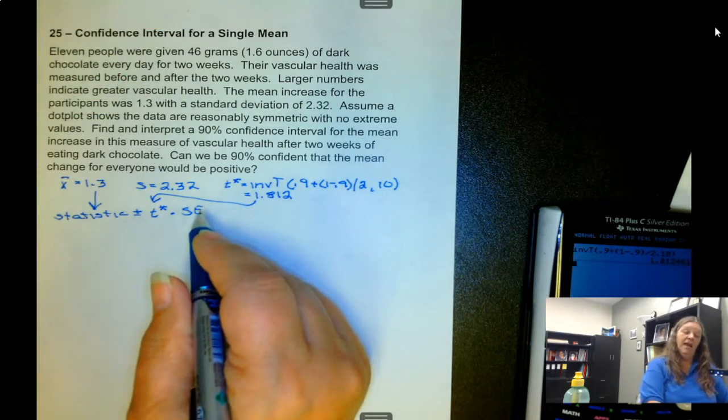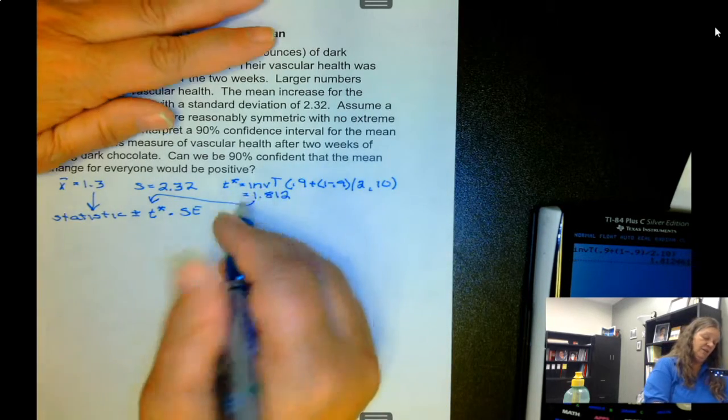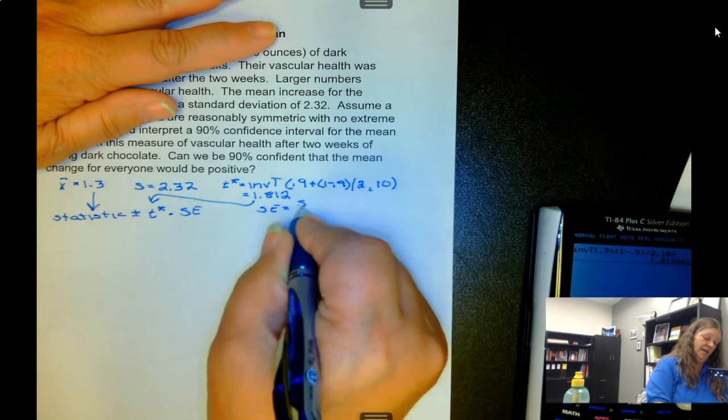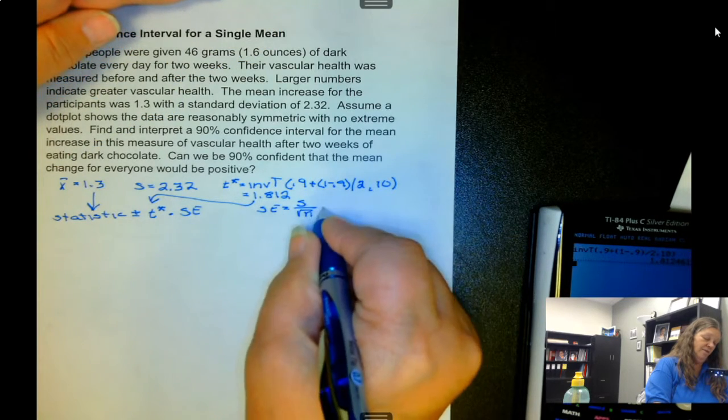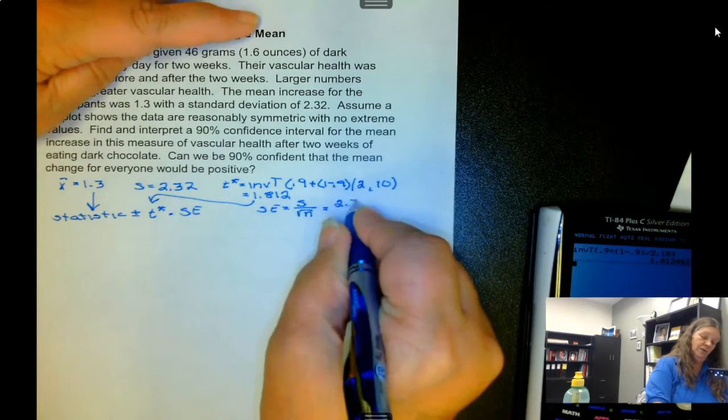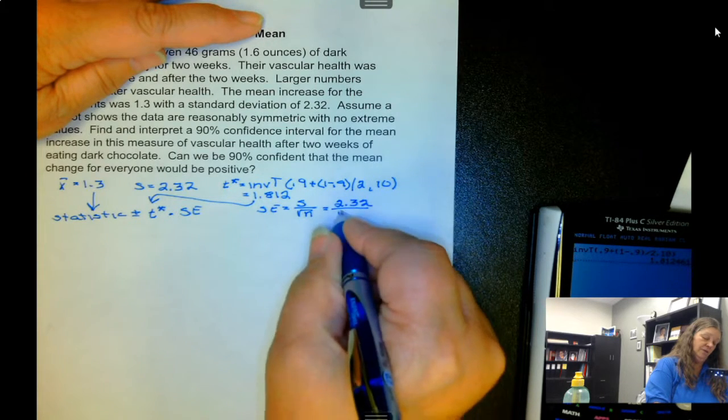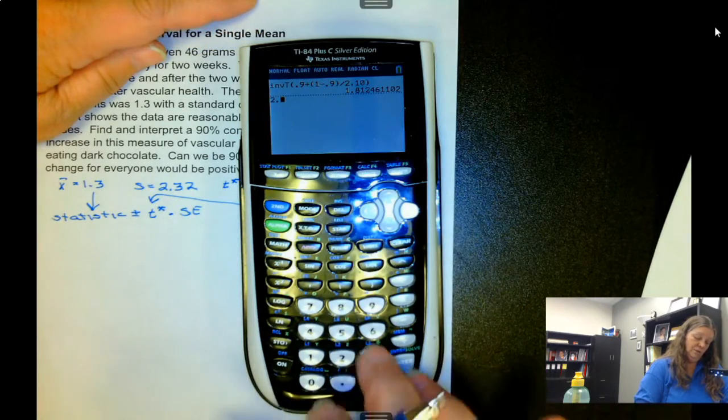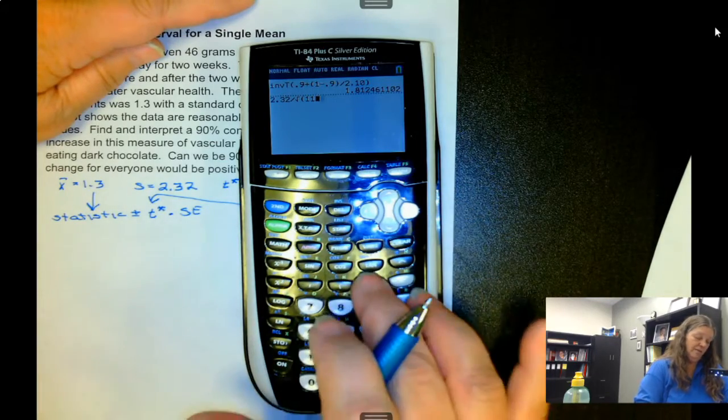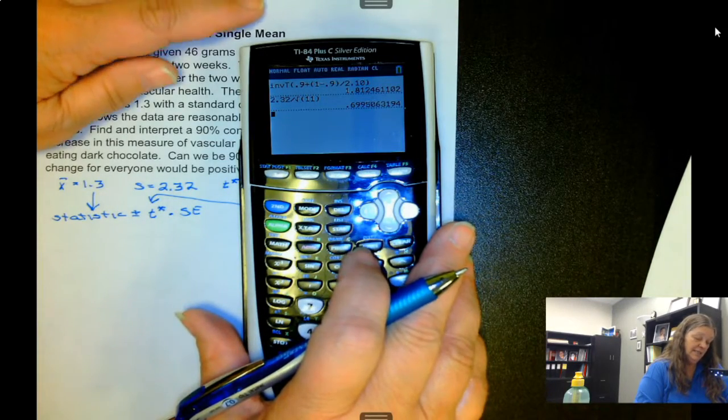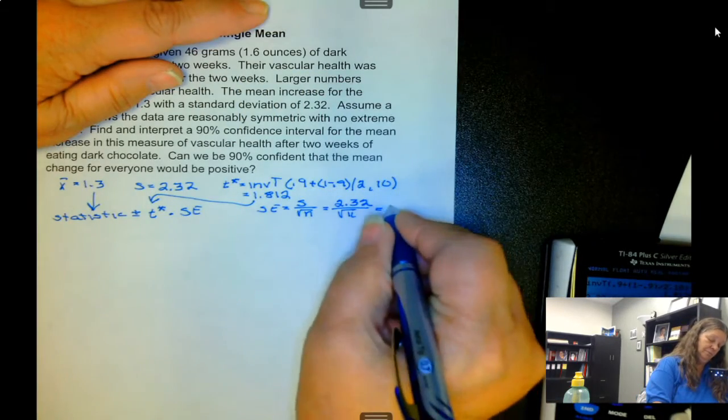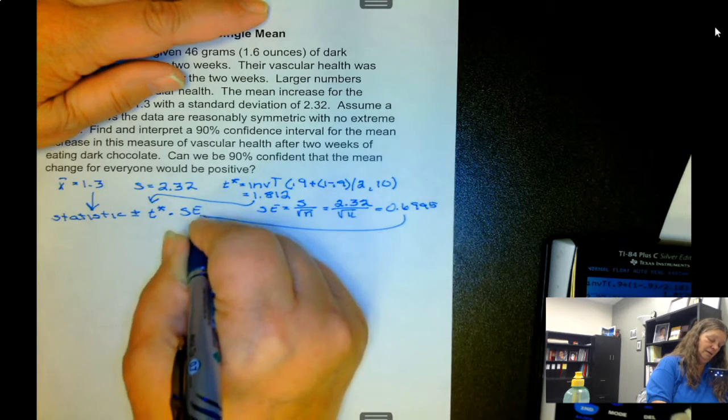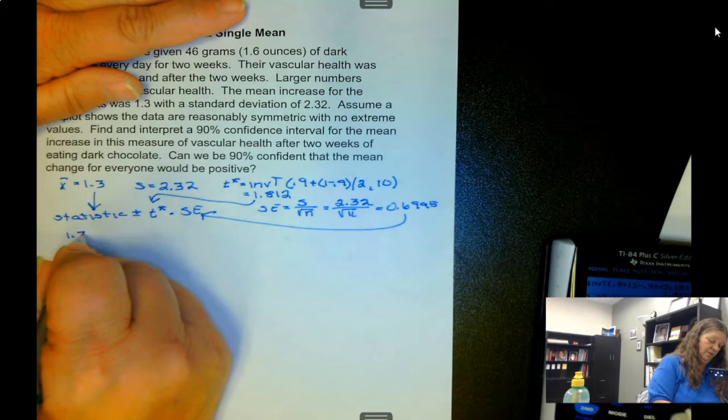Now for our standard error, because we do not have population standard deviation, we're going to use sample standard deviation. So the standard error is s over square root of n, so it's 2.32 over the square root of 11. 2.32 divided by square root of 11 gives us 0.6995.